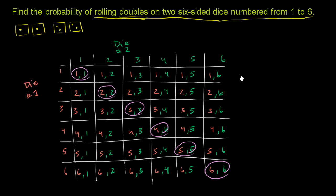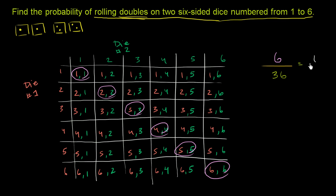Given that, let's answer our question: what is the probability of rolling doubles on two 6-sided dice numbered from 1 to 6? The probability is going to be equal to the number of outcomes that satisfy our criteria — which is 6 — over the total number of outcomes, the size of our sample space, which is 36. If you simplify this, 6 over 36 is the same thing as 1/6. So the probability of rolling doubles on two 6-sided dice numbered from 1 to 6 is 1/6.